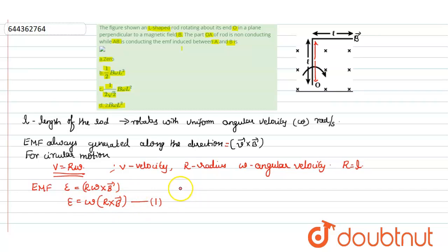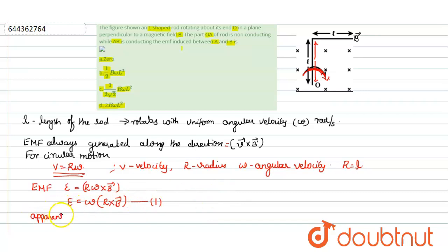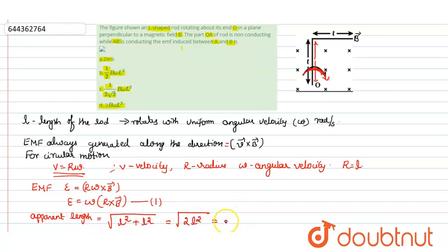Since the rod is rotating about O, and it is L-shaped, the apparent length will be calculated. The apparent length is the square root of l squared plus l squared, which equals l root 2. We can denote this apparent length as L.